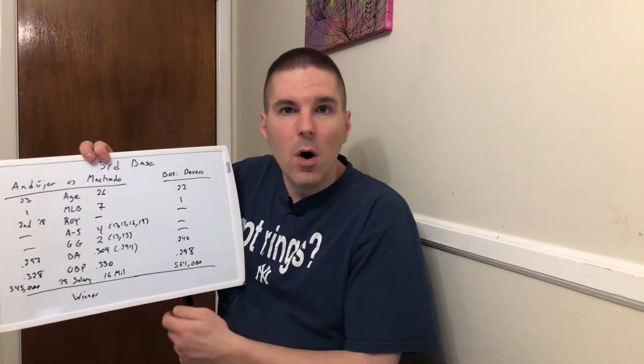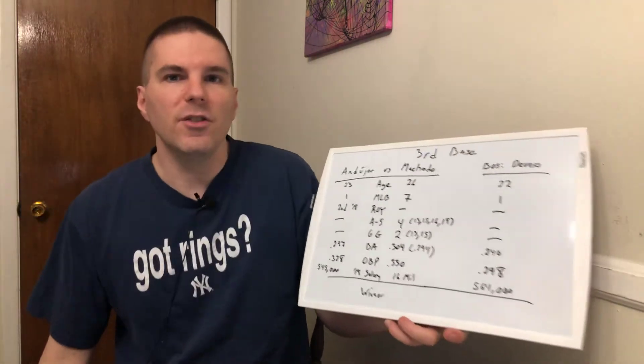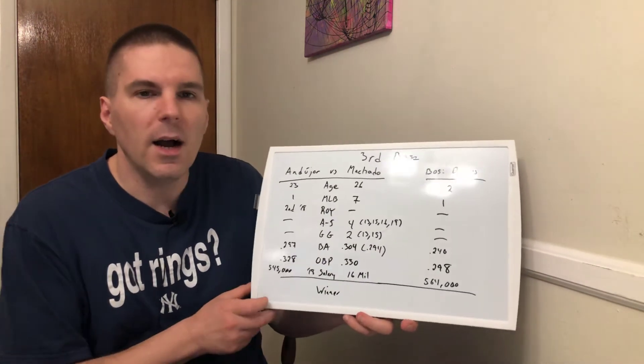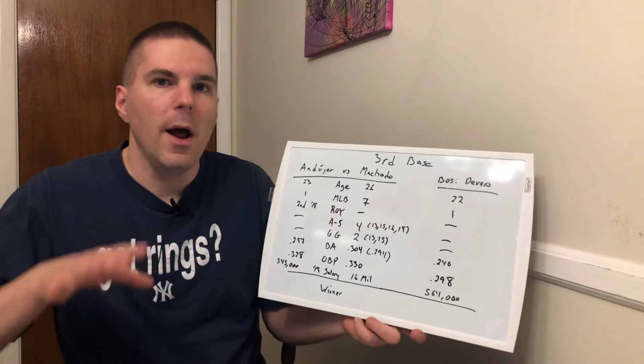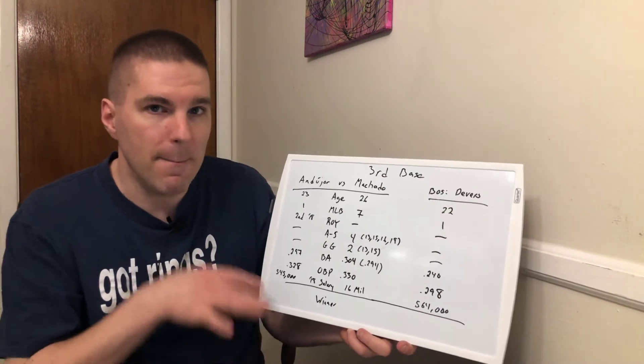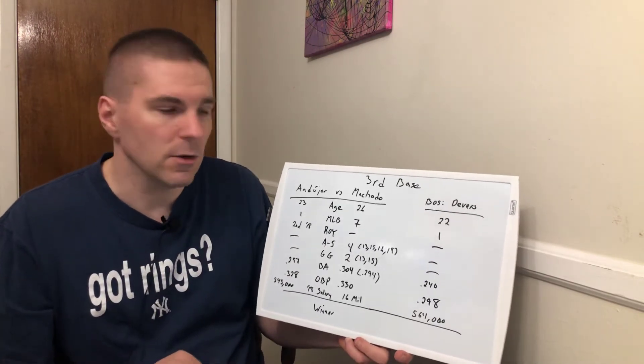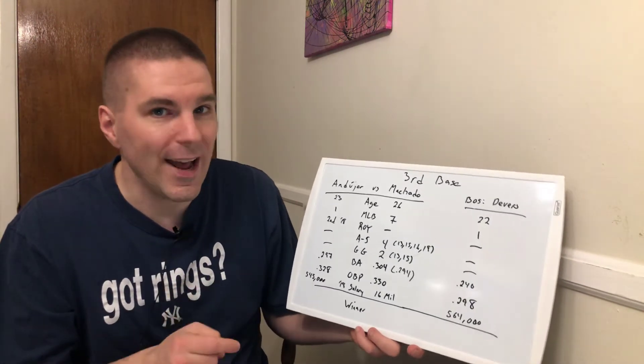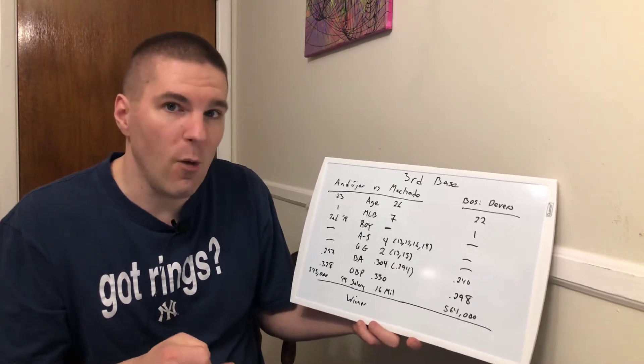Rookie of the year, Andujar finished second to the Angels pitcher-hitter, Ohtani. Considering how rare it is to pitch well and hit well in the major leagues, I can't really fault Major League Baseball writers for giving him the rookie of the year. However, him aside, Andujar was a very close second. And bar none, far and away, the best option after it. So finishing second is definitely notable. It's also notable because neither Devers nor Machado ranked in their rookie of the year season.